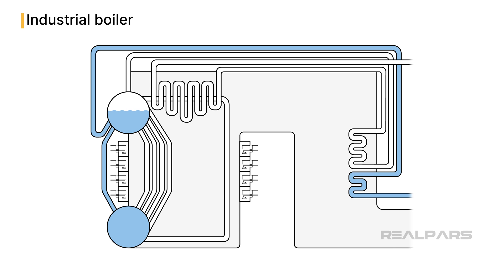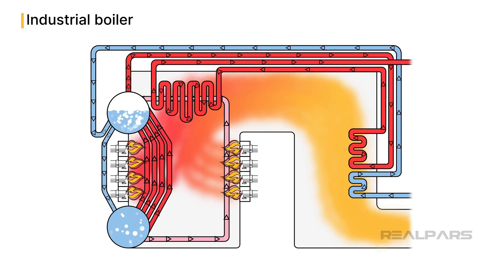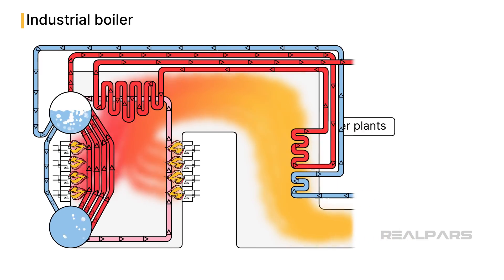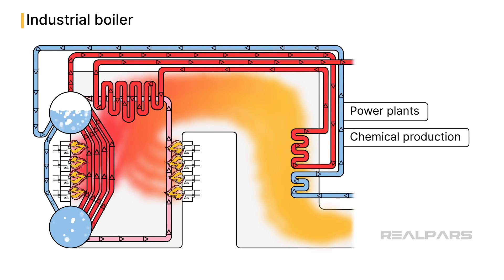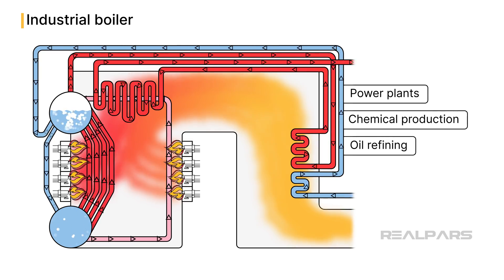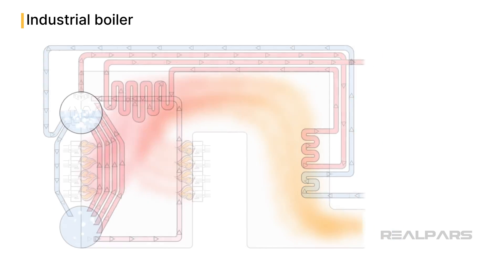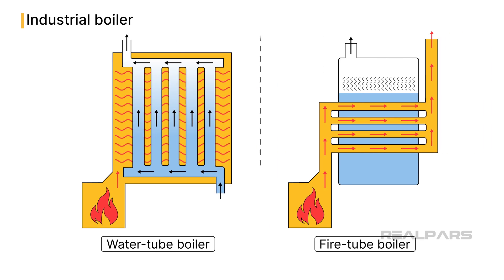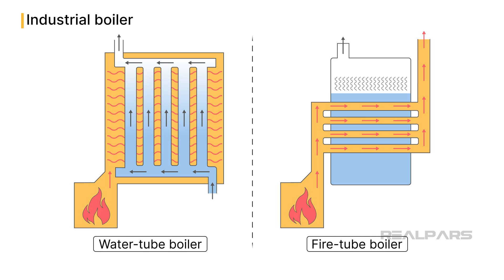Industrial boilers are designed to heat water to produce steam or hot water for various industrial processes like power plants, chemical production, and oil refining. Let's take a look at a few types of boilers and how they work with a simple form of boiler design.